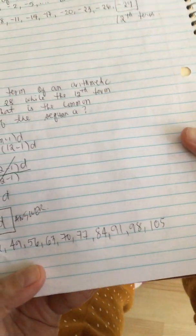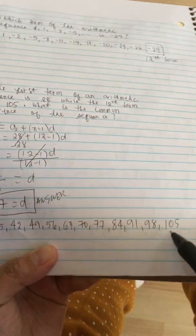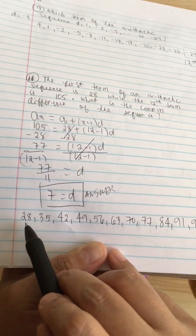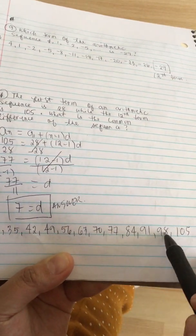So we'll see if this is the 12th term. As we said, 105 is the 12th term. So let's count. 1, 2, 3, 4, 5, 6, 7, 8, 9, 10, 11, 12.